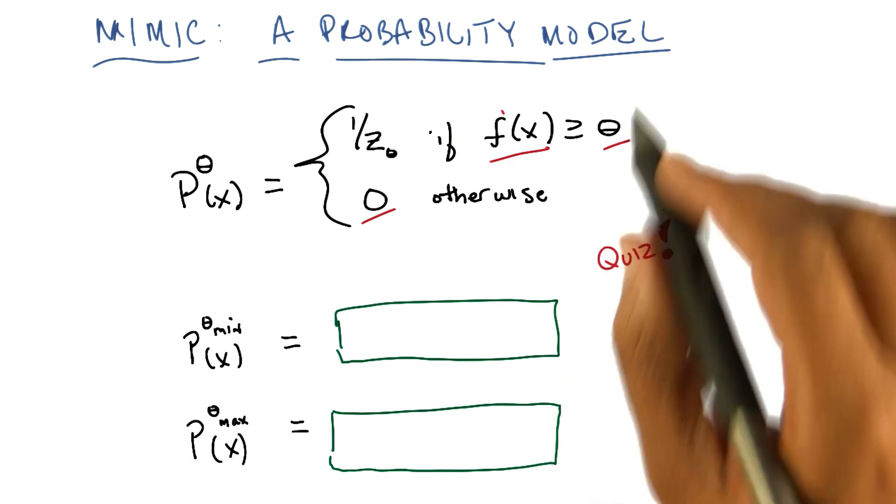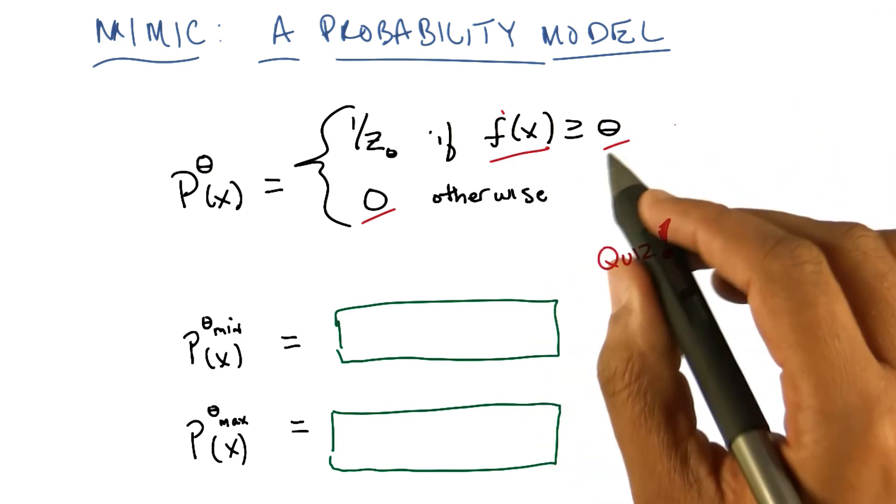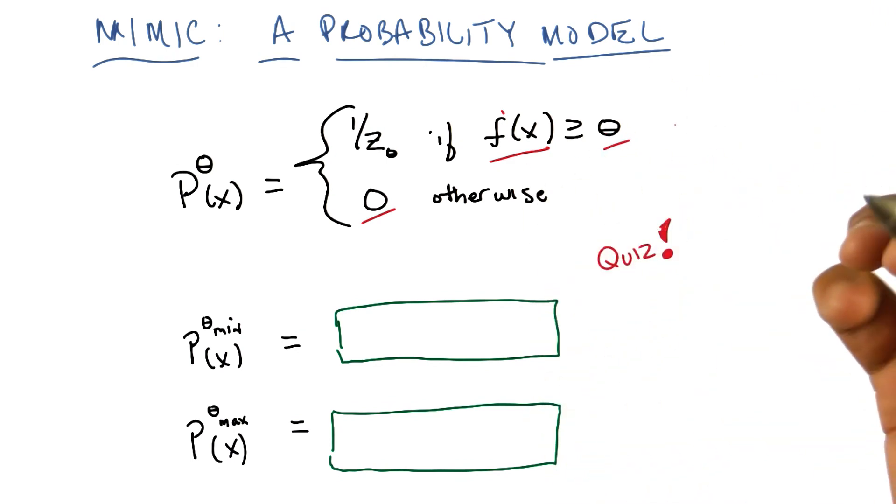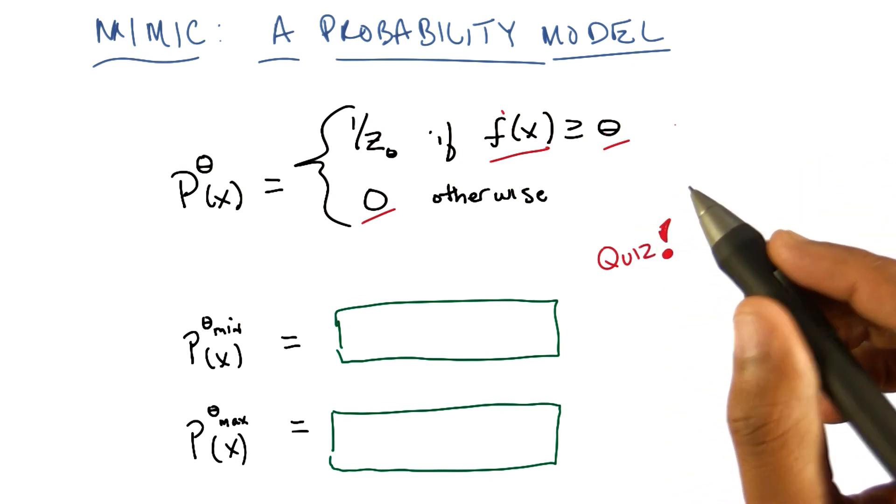The first question is theta is some threshold. And so, let's imagine the fitness function has to have some minimum value and some maximum value. Okay?